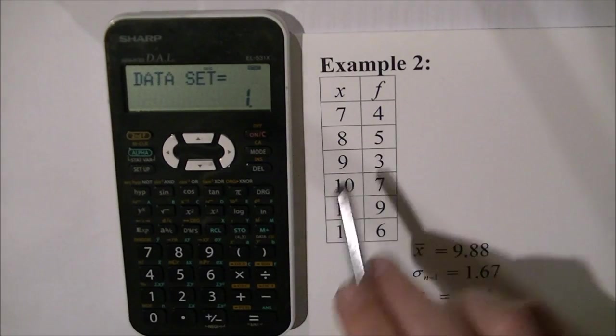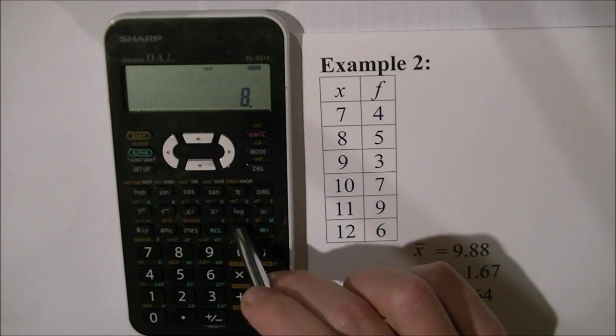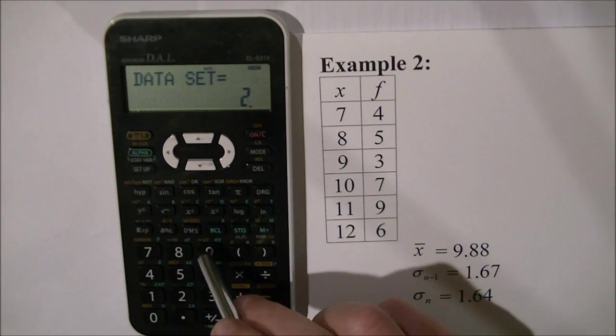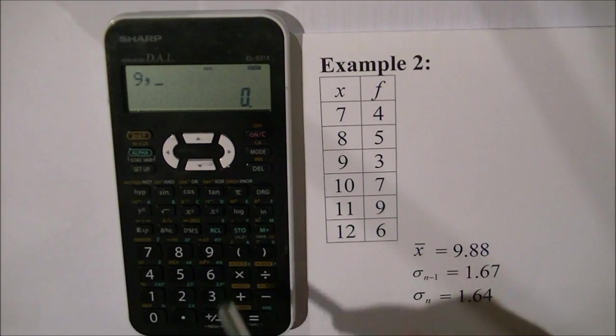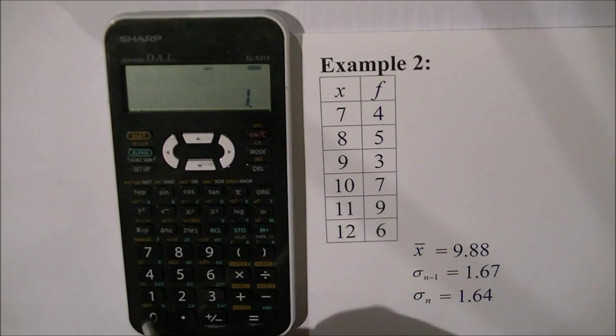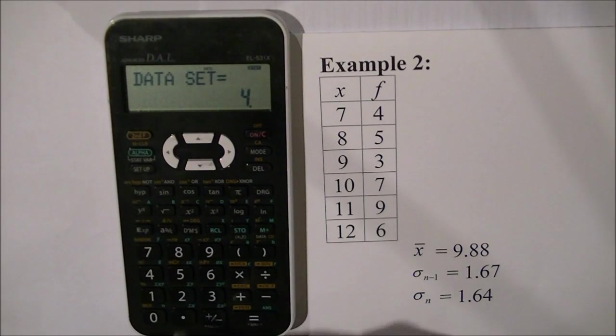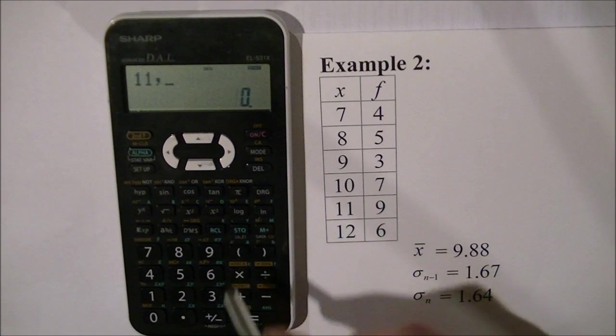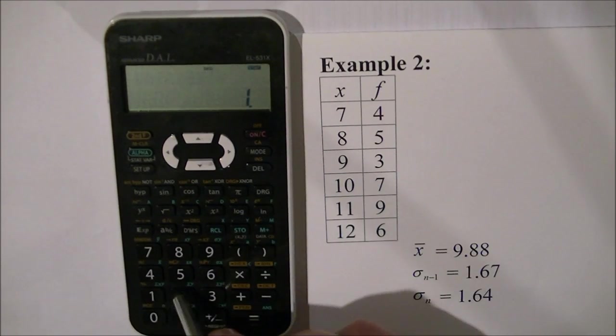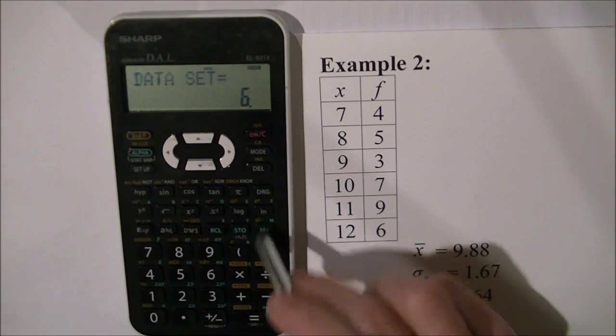Now I'm going to enter the remaining scores. I press 8 STO 5 M plus, 9 STO 3 M plus, 10 STO 7 M plus, 11 STO 9 M plus, and 12 STO 6 M plus.